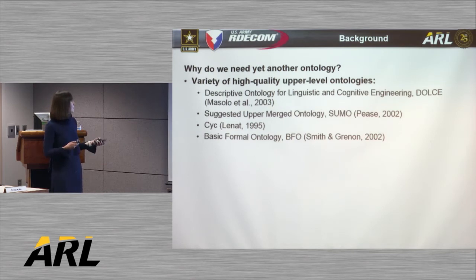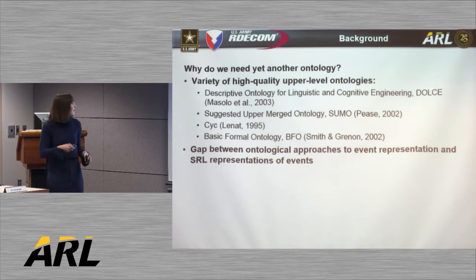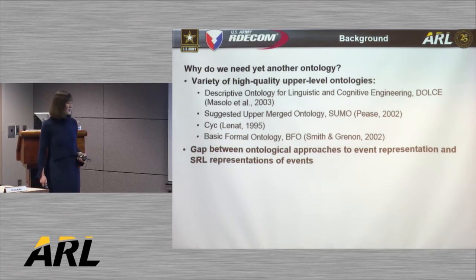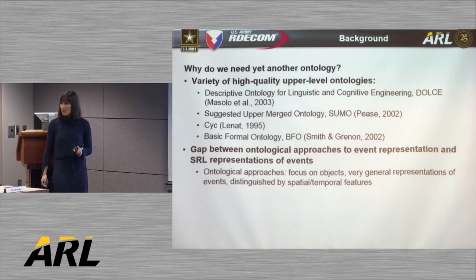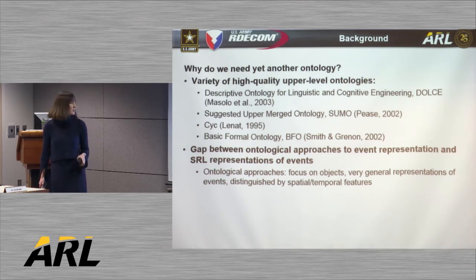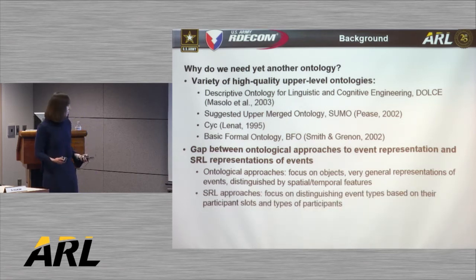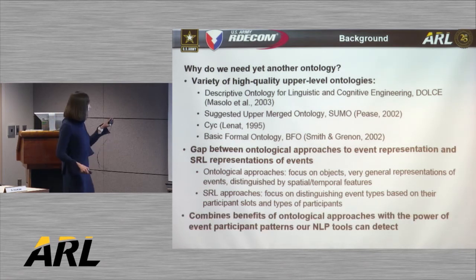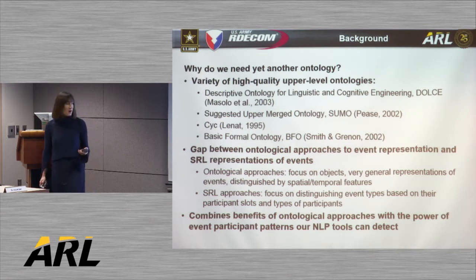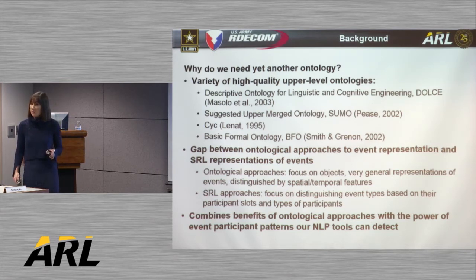Why not use an existing upper-level ontology like Dolce, Sumo, Psych, or BFO? We found an insurmountable gap between the approaches to event representation taken in those ontologies and in our SRL resources. Those ontological approaches focus primarily on objects, giving only very general representations of events to distinguish them from objects, primarily using spatial and temporal features. Our SRL resources, on the other hand, focus on distinguishing event types based on their participant slots and the types of words that tend to fill those slots. Our ontology uniquely bridges the gap between these existing ontological approaches and SRL approaches, combining the benefits of ontologies with the power of event participant patterns that our NLP tools can detect.